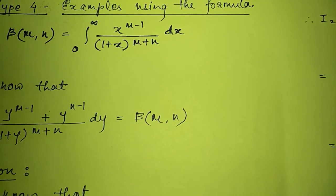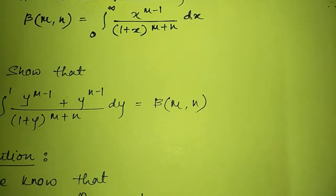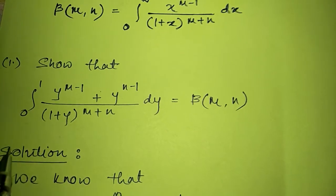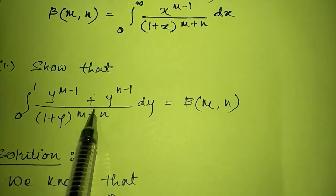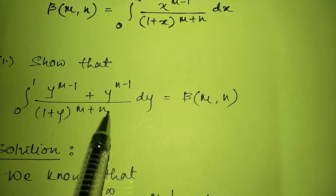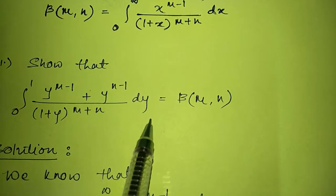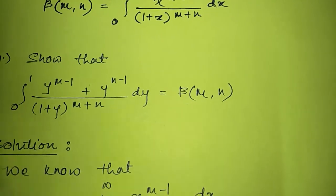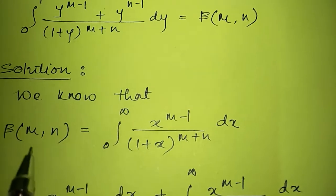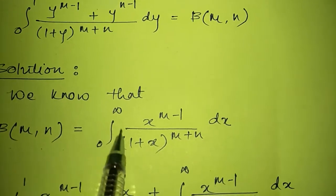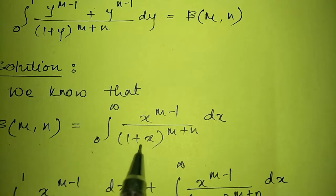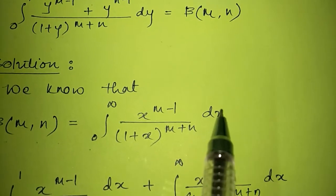We are going to make use of this definition of beta function in solving the numericals. The first one is: show that integral from 0 to 1 of y raised to m minus 1 plus y raised to n minus 1, the whole upon 1 plus y raised to m plus n, dy is equal to beta(m,n). We know beta(m,n) is equal to integral from 0 to infinity of x raised to m minus 1 upon 1 plus x bracket raised to m plus n dx.